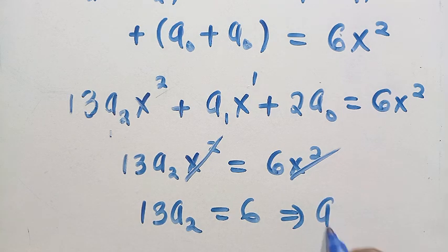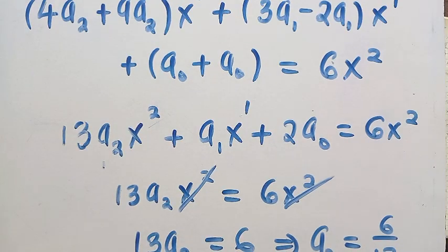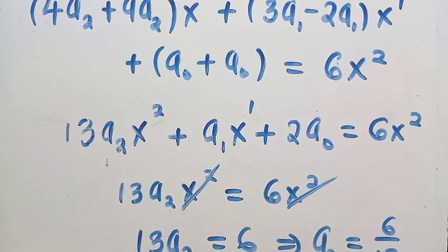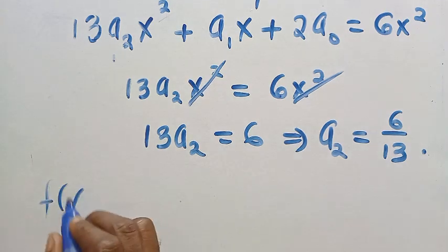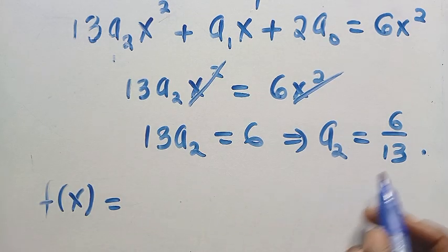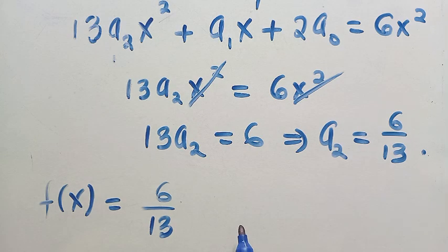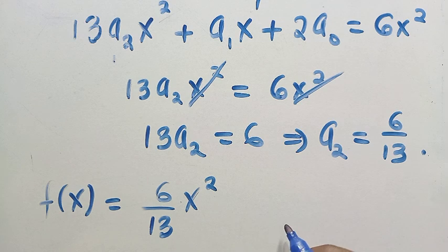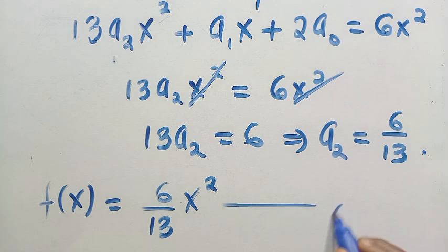For the other parts: we only have x squared on the right-hand side — there is no x term and no constant. So we cannot compare anything with a₁ or a₀, meaning a₁ equals 0 and a₀ equals 0. Therefore f of x equals (6/13)x².